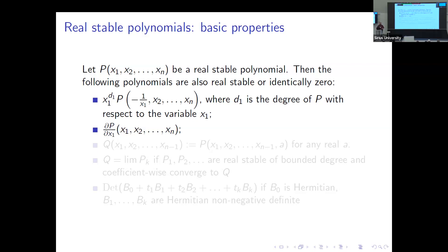Another, more subtle property is that you may take partial derivatives. It is said about one partial derivative but of course once you realize this you know it for many partial derivatives. This is already not so obvious. It is related to the one-dimensional statement known as the Gauss-Lucas theorem: the roots of the derivative of a complex polynomial lie in the convex hull of the roots of the polynomial itself. So if all roots lie in the lower half plane, then the roots of the derivative cannot lie in the upper half plane.